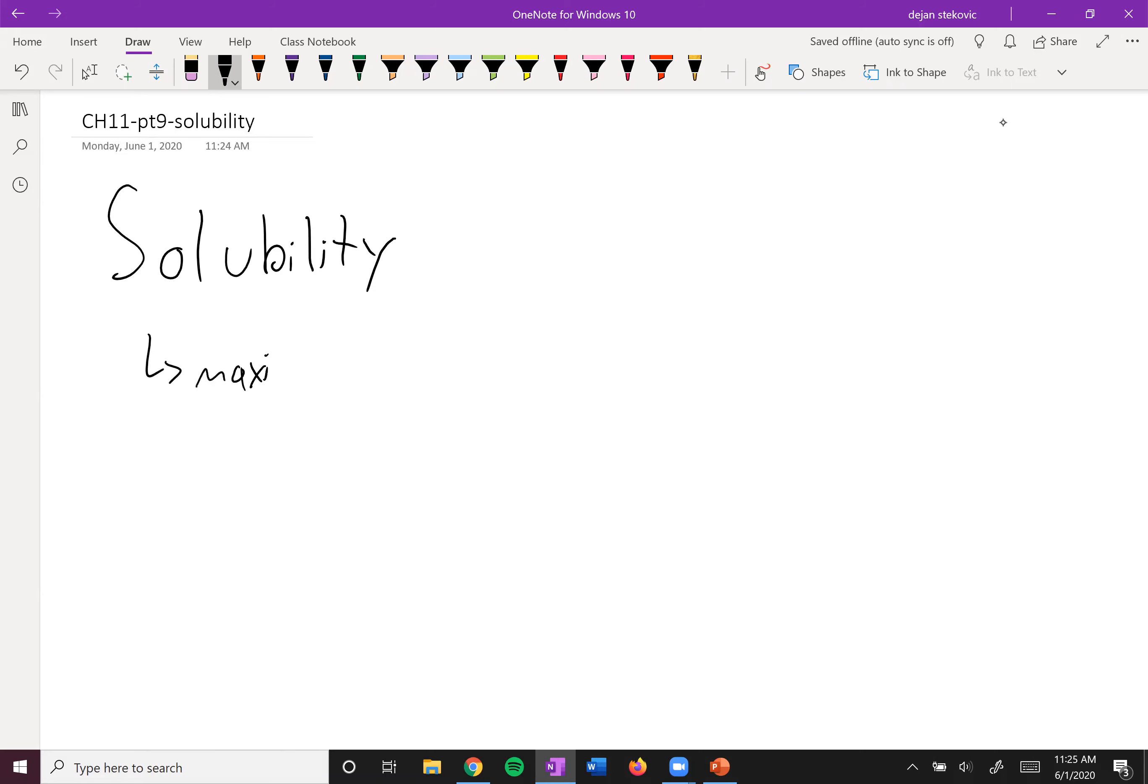Remember, we defined solubility as the maximum concentration of solute, but there's a caveat here: when the process is at equilibrium. What we mean by equilibrium is that there's still stuff precipitating out, still stuff dissolving, so we're at a dynamic equilibrium, but overall it looks like nothing is happening, and when you're at equilibrium, you're at the end of your reaction.